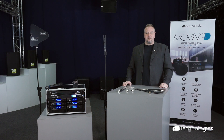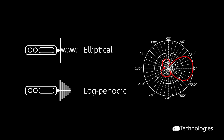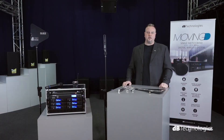Directional antennas can be further divided into log periodic or fin antennas and elliptical antennas. Their reception capacity is mainly focused in the frontal direction and, consequently, they reduce the intensity of other signals coming from other directions.